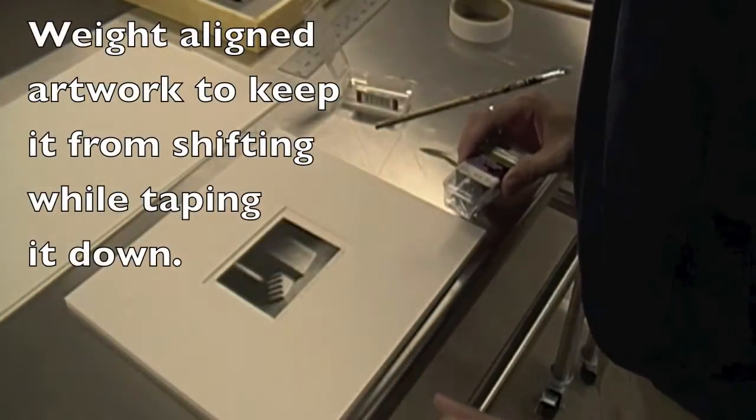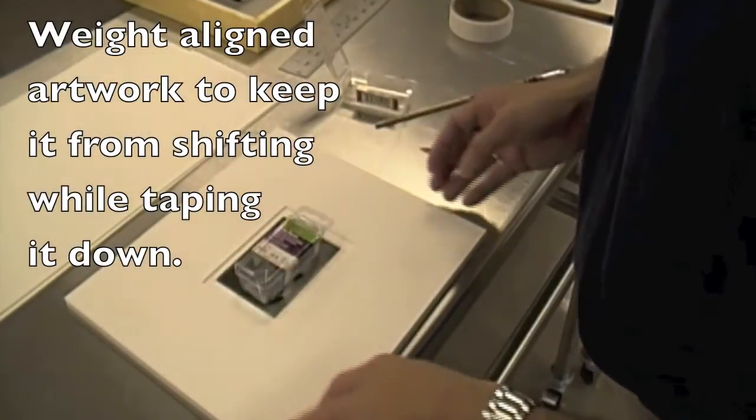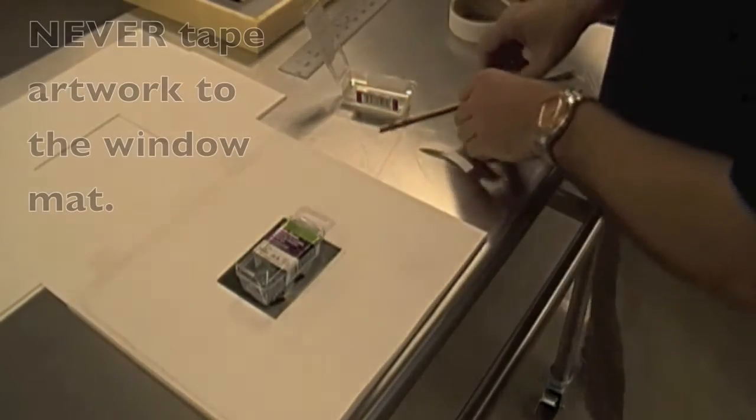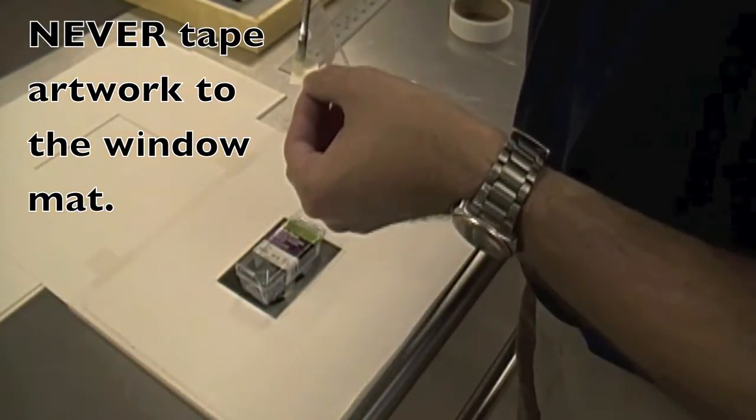When you start to put the work in there you need to put something through the window once it's perfectly aligned so that it doesn't move when you start to tape it down. Never tape the artwork to the actual matting board, the front piece. You're going to tape it onto the back.